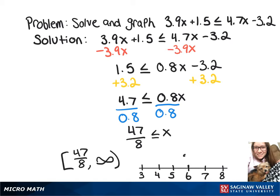So that's going to put us almost at 6. Let's put a closed circle right there and then an arrow pointing up to infinity. Thank you.